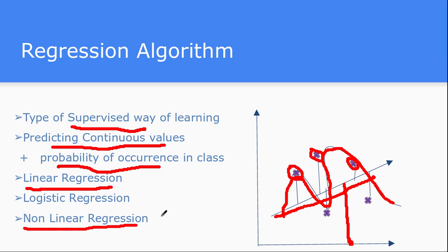This family of regression algorithms is helpful for predicting continuous values, and it can also be helpful for finding a particular class based on probability. It will tell us that an individual record belongs to a particular class with a certain probability, so you can decide the confidence score for individual records across individual classes. This type of regression is called logistic regression.